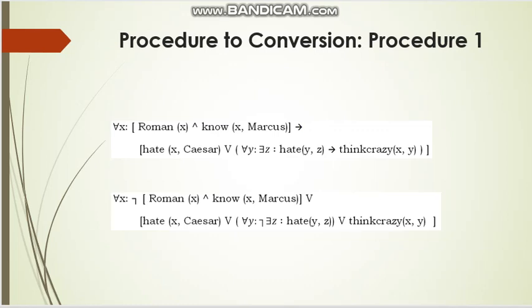For the second implication sign, A is this particular part and B is the other part. We write one NOT sign before that bracket, so NOT(A) OR B. This is how we remove the implication sign by using the OR and NOT signs.